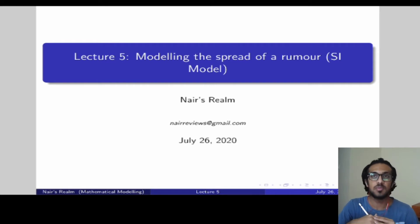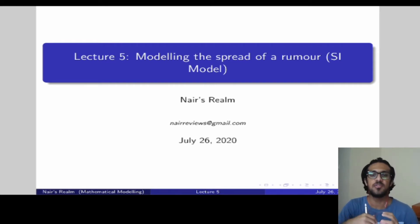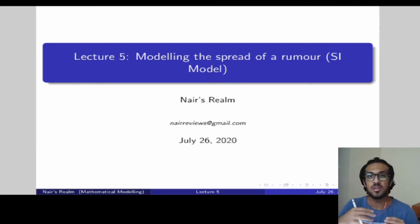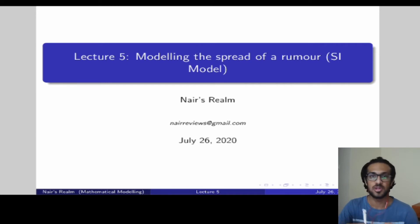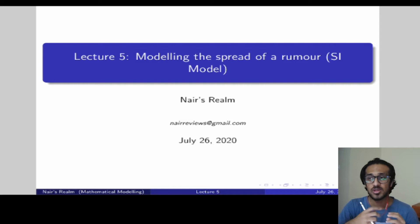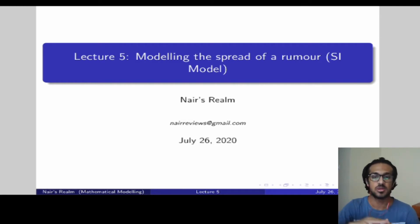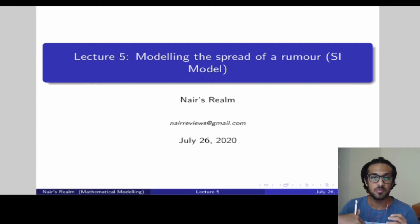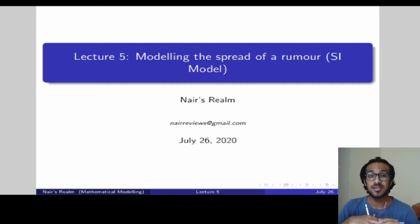Over the past few years, especially since WhatsApp has become a big deal, we've seen increasing reports of forwards being circulated on WhatsApp containing wrong information and misinforming people. So how does a rumor, or misinformation, or wrong information spread amongst a community? That's roughly the idea we're going to be approaching in today's video, using the SI model we learned in the last video.